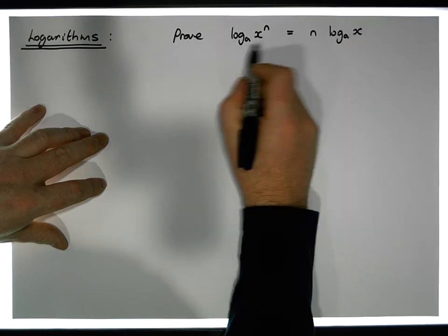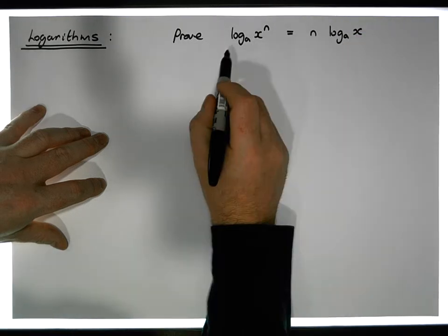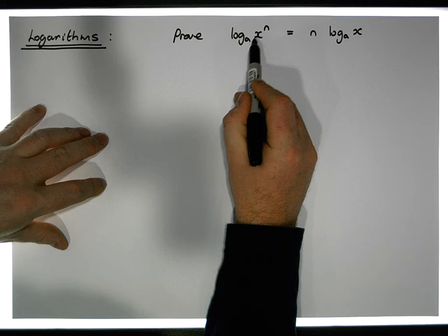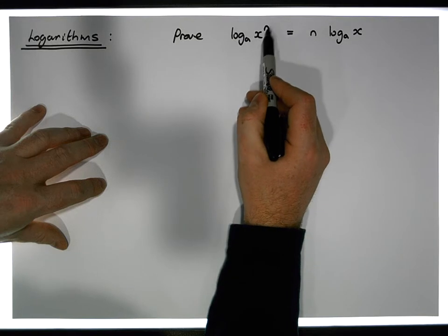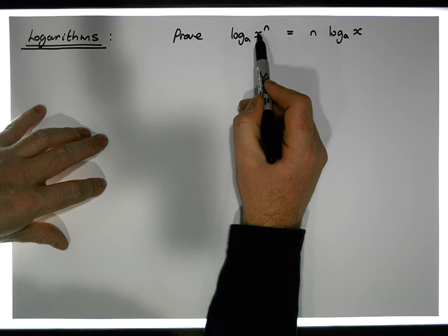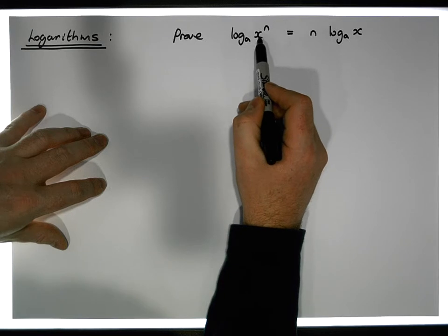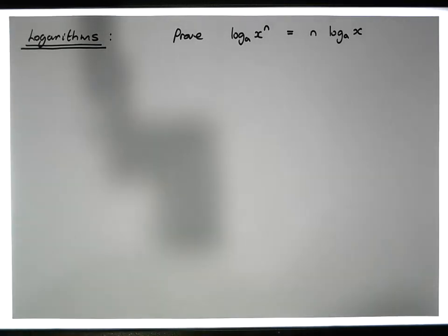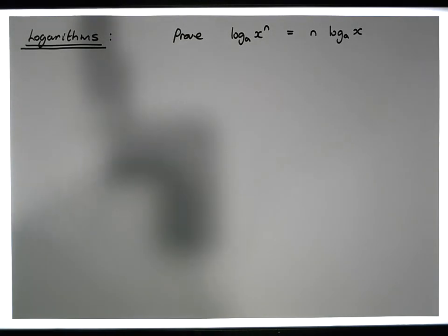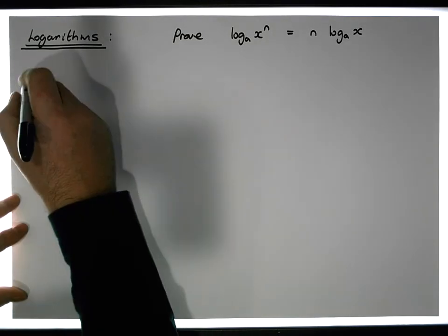It's a really important identity because what it allows us to do is break an exponent away from its particular base. So we'd like to do this particular proof, but let's first recall the following fact.